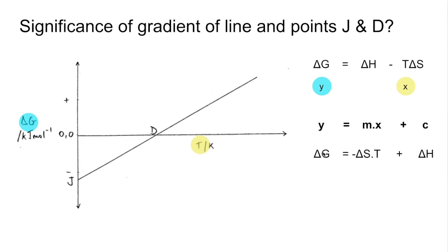So y is delta G, x is the temperature, so the minus delta S must be the m because that's multiplying the x term and the c is delta H. So it's quite easy now because the gradient of the line, well that's m, so that's minus delta S.